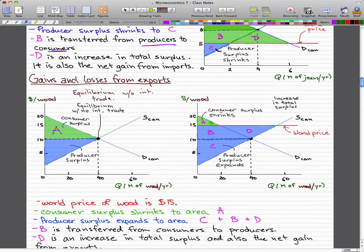Now the consumer surplus shrinks to this small little area of A. Producer surplus, which we have here before international trade, actually expands to include the area C plus B plus D.